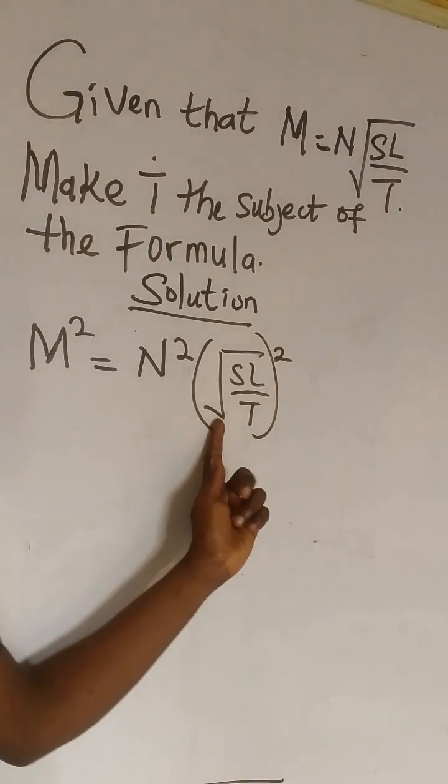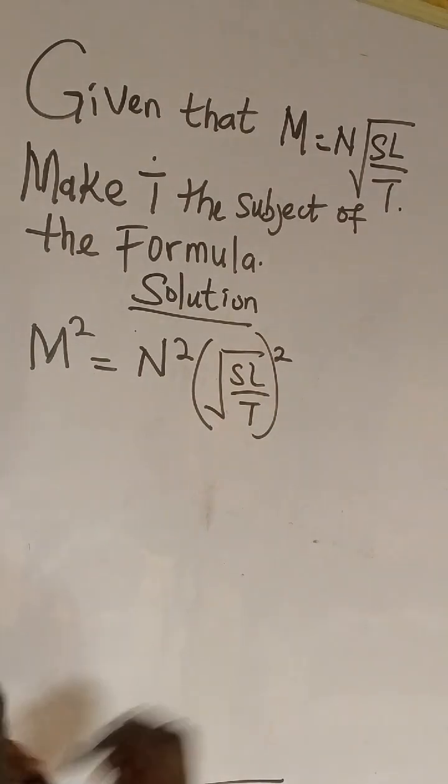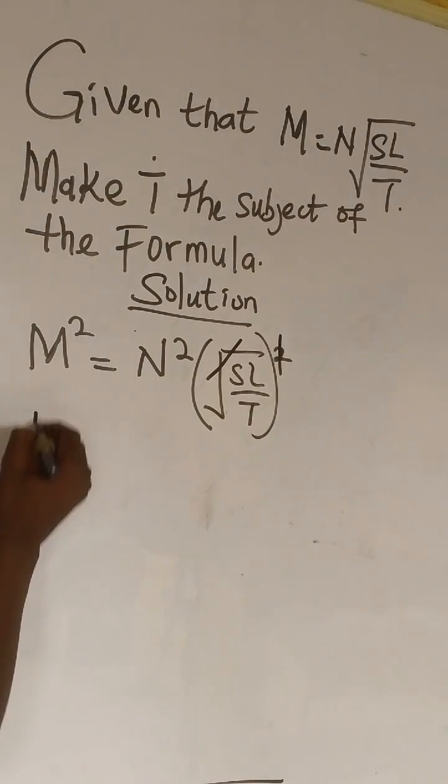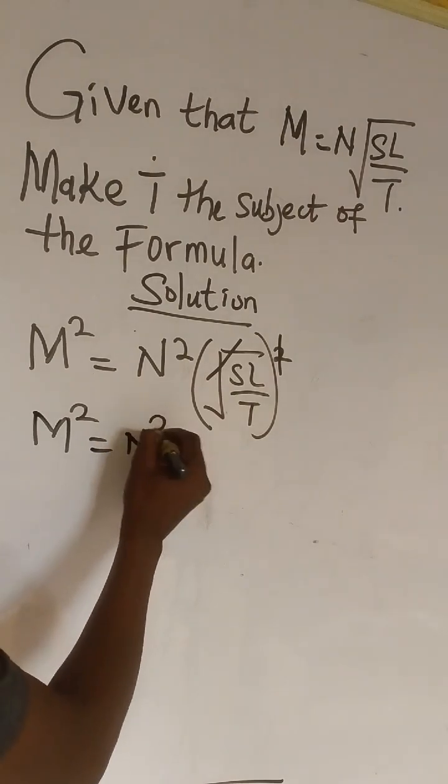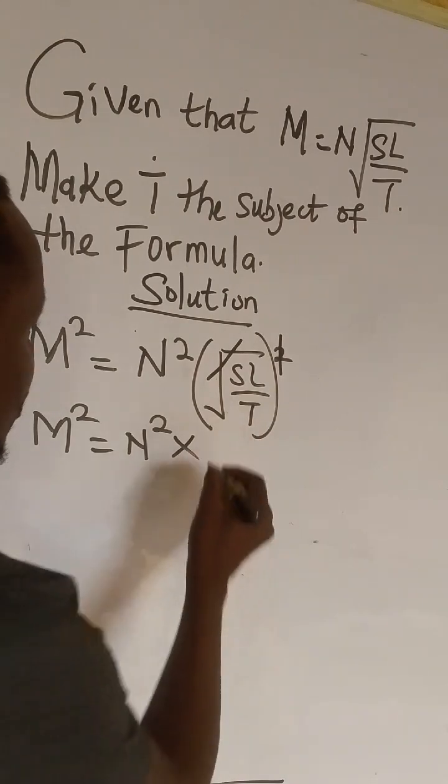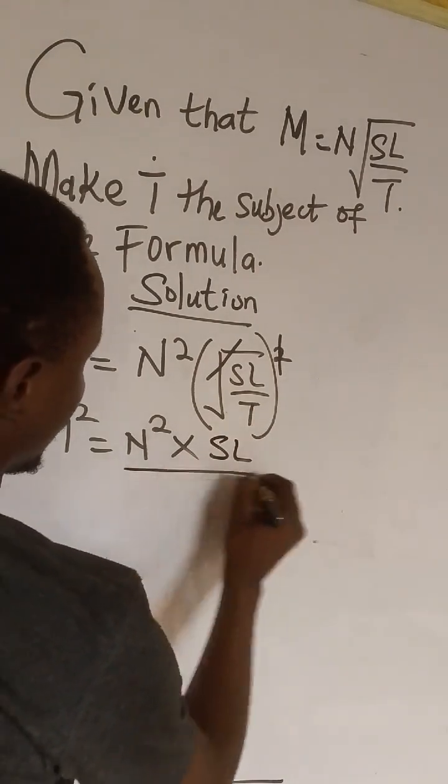That means we are trying to eliminate this root first. So this square here, we cancel the root. We have M squared equals N squared times the bracket SL over T.